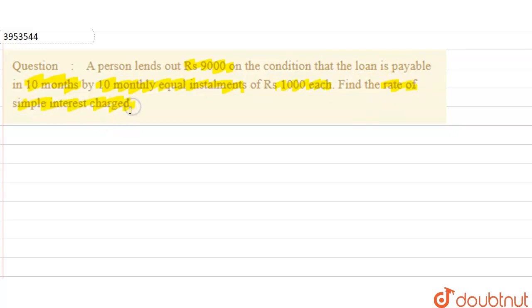So what do we call rate of simple interest charged? The question says that a person has Rs 9000 on the loan. It says that you have to pay for 10 months, and every month you have to pay 1000 rupees. We call rate of interest. Now every month you have to pay 1000 rupees. Typically, one installment is back.